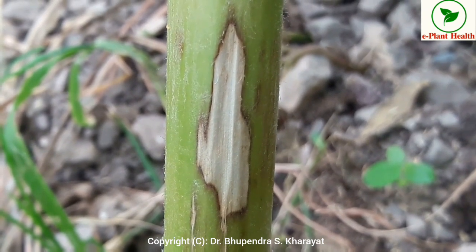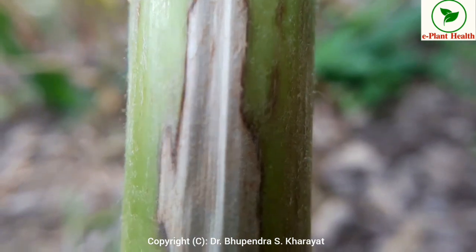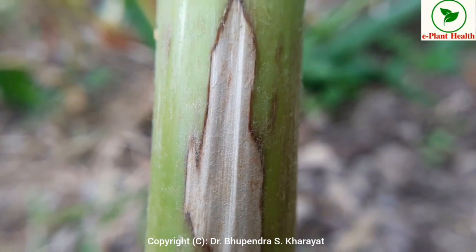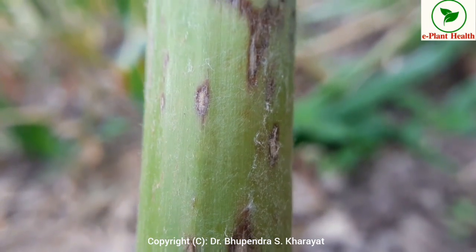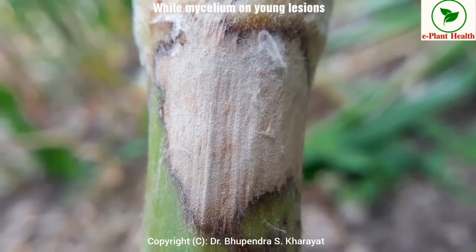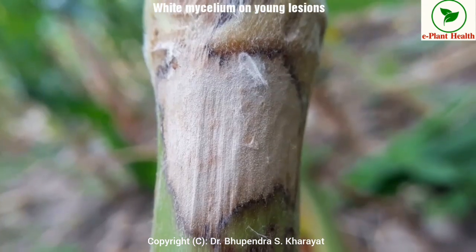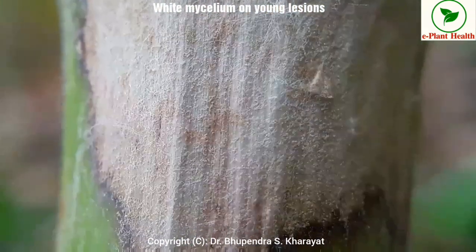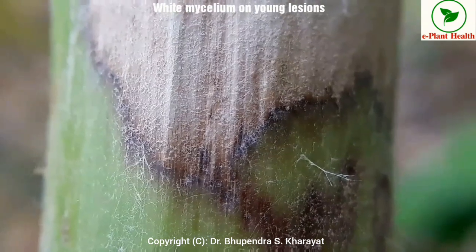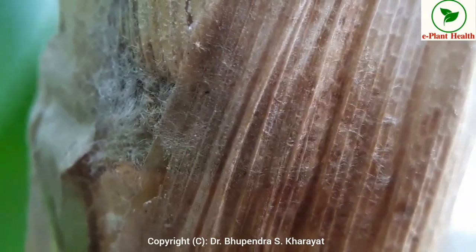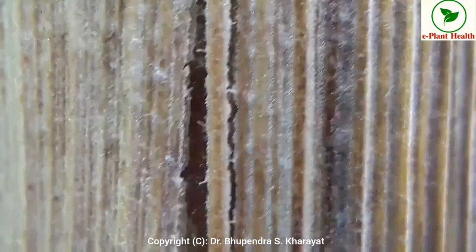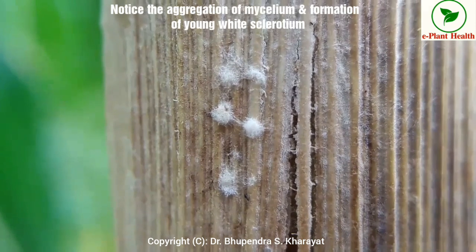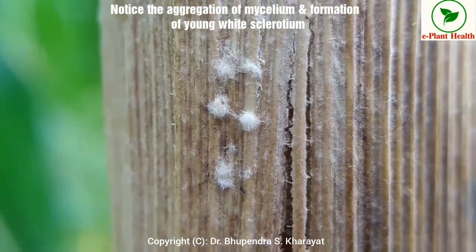On young lesions of this fungus you can notice the white mycelium. If you closely observe these lesions, you will notice the aggregating mycelium which will form the sclerotium of this fungus, as you can see in this video also.